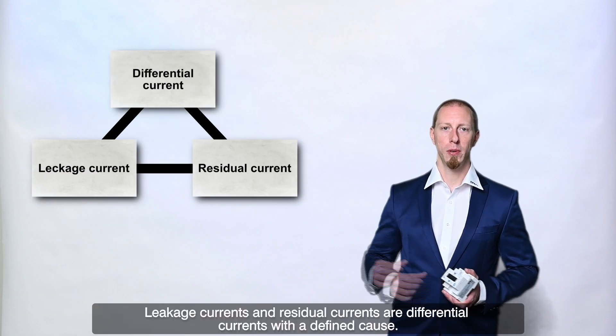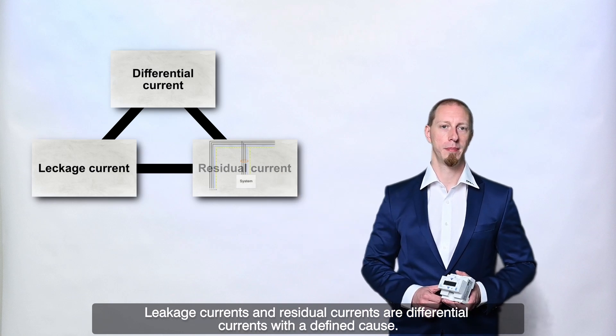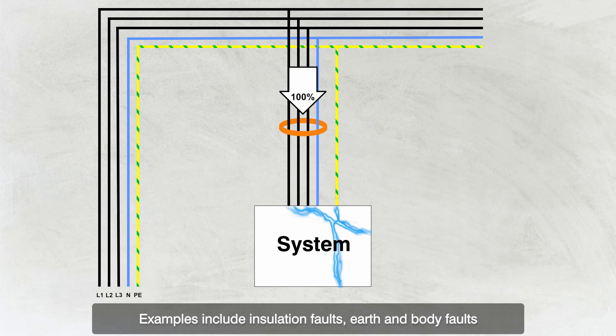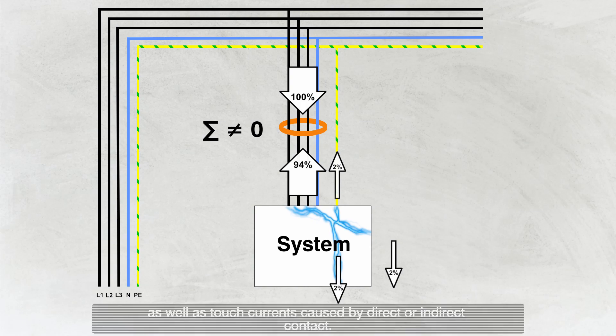Leakage currents and residual currents are differential currents with a defined cause. Residual currents, as the name implies, are due to faults in the system. Examples include insulation faults, earth and body faults, as well as touch currents caused by direct or indirect contact.